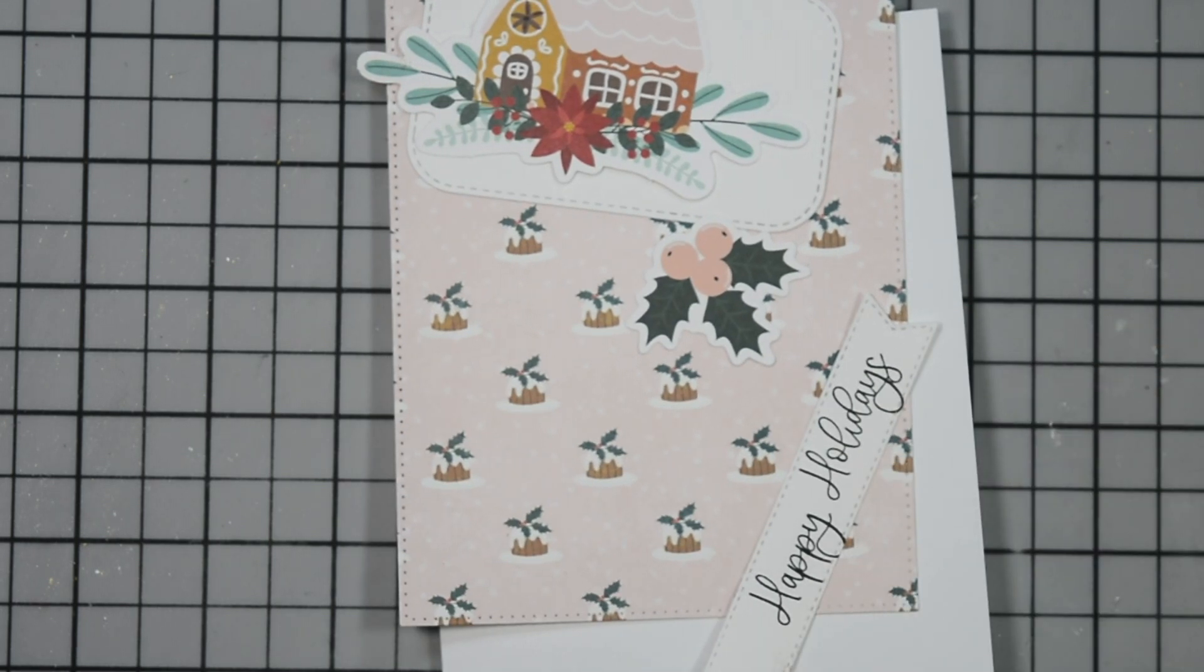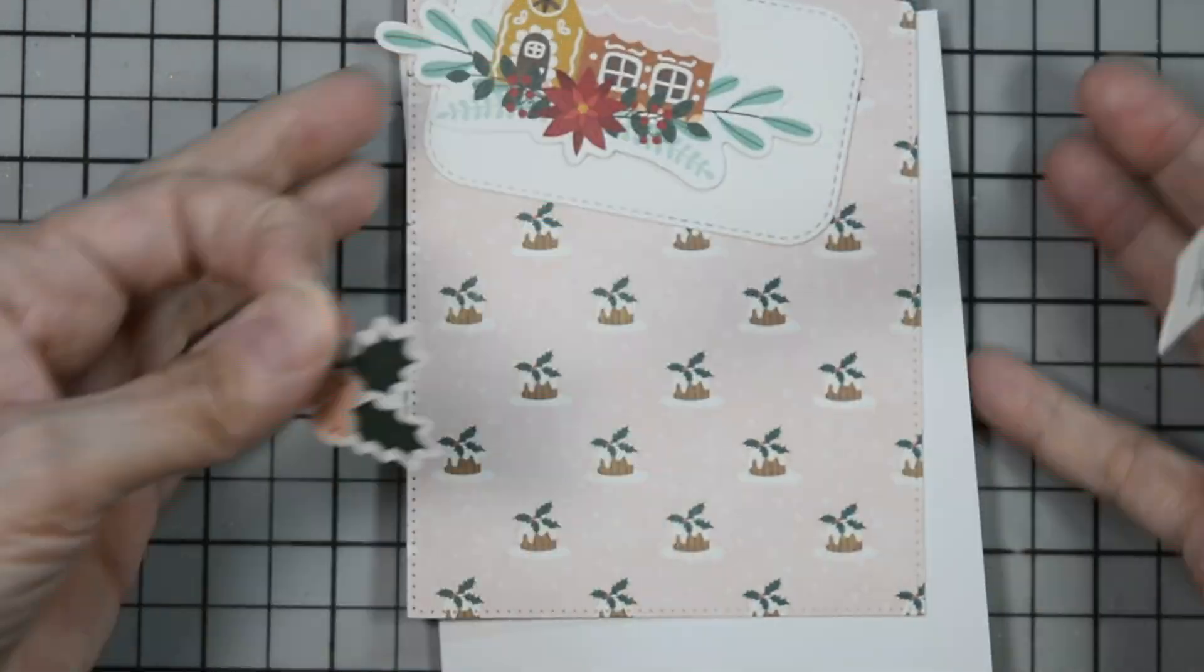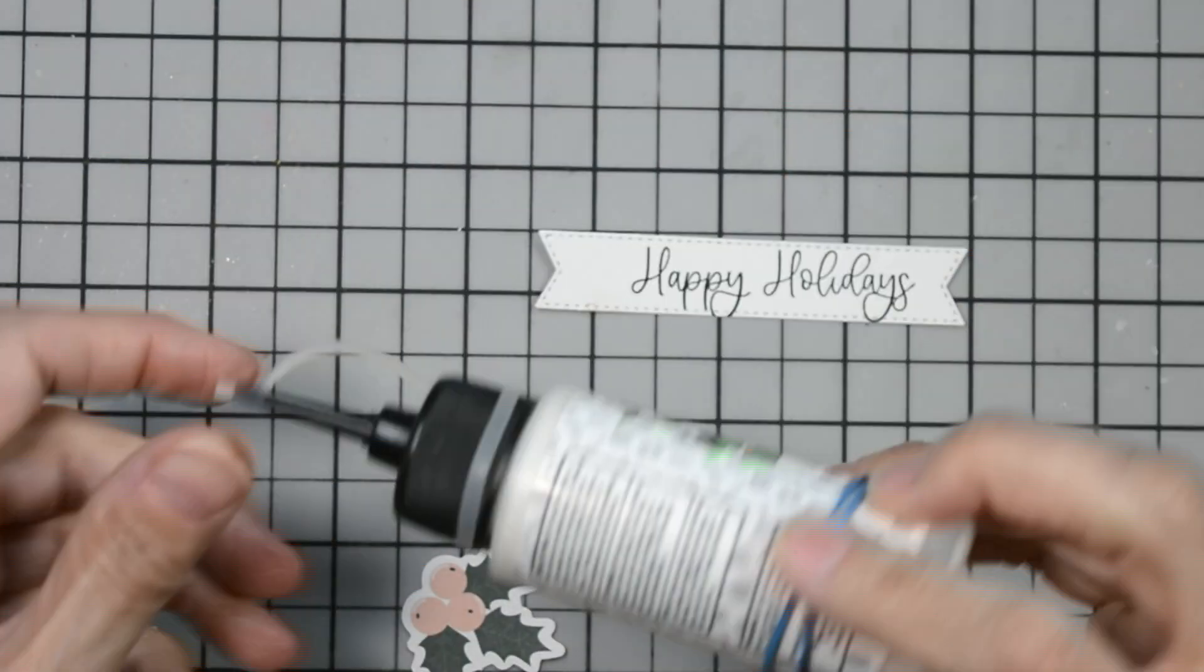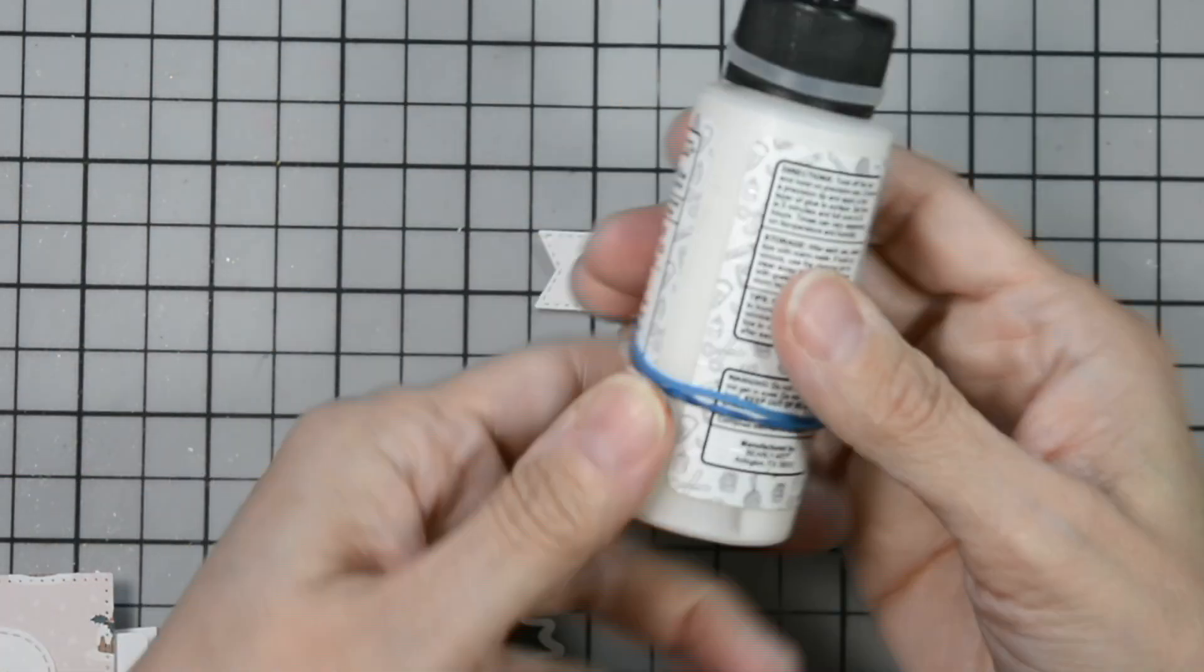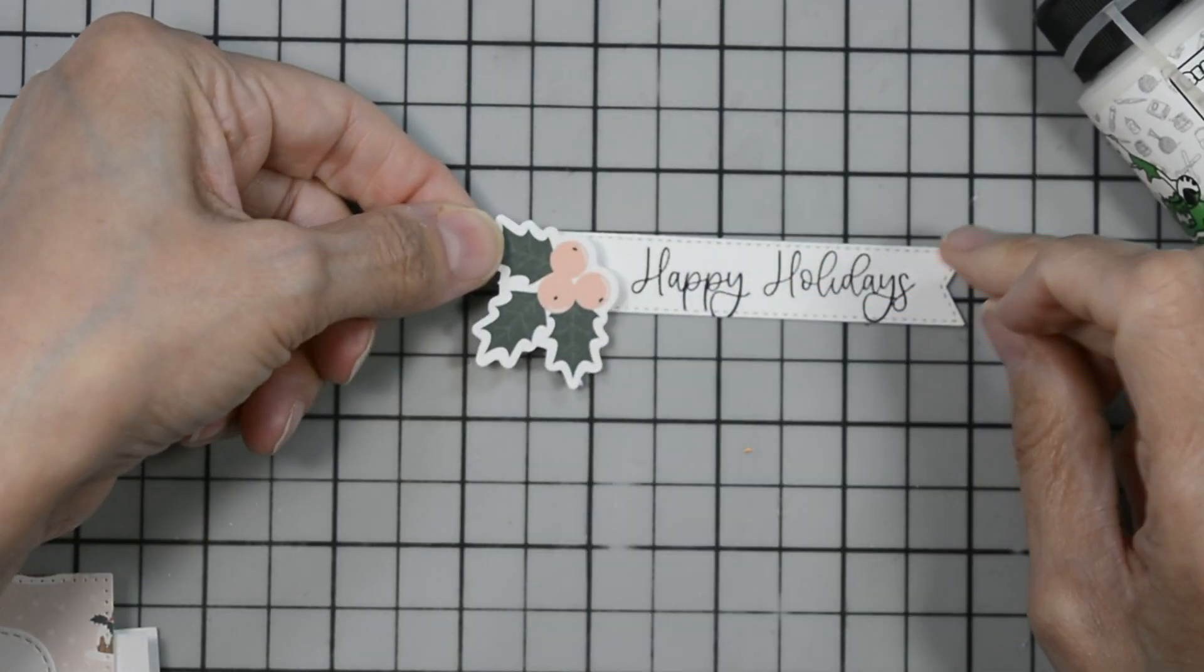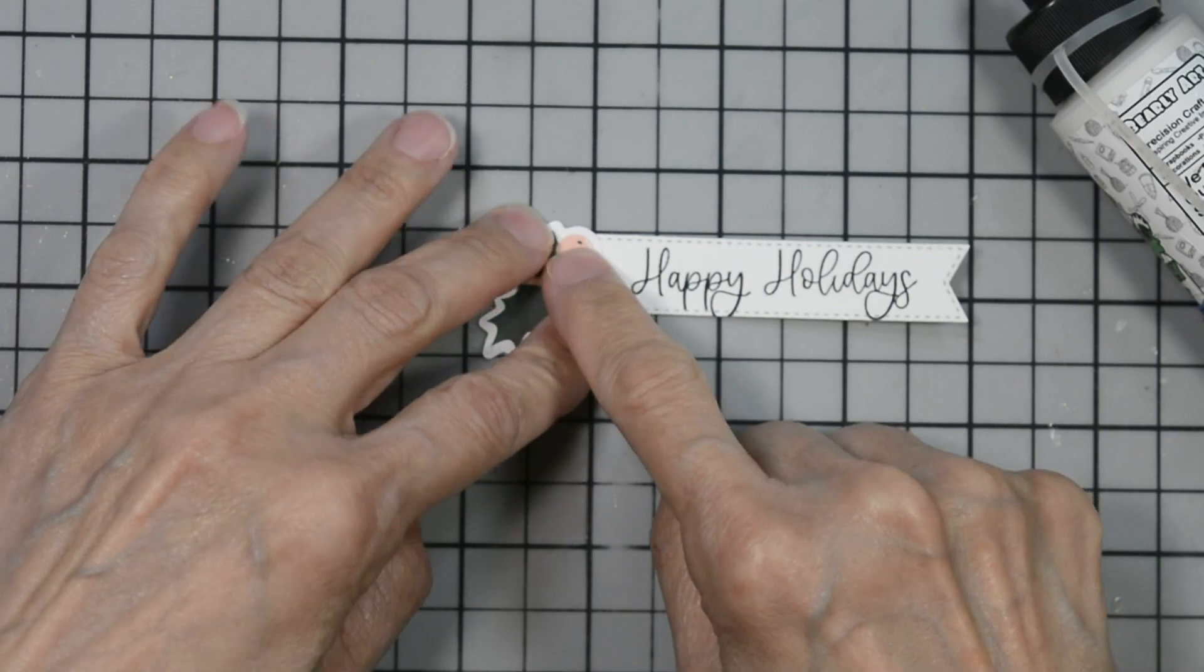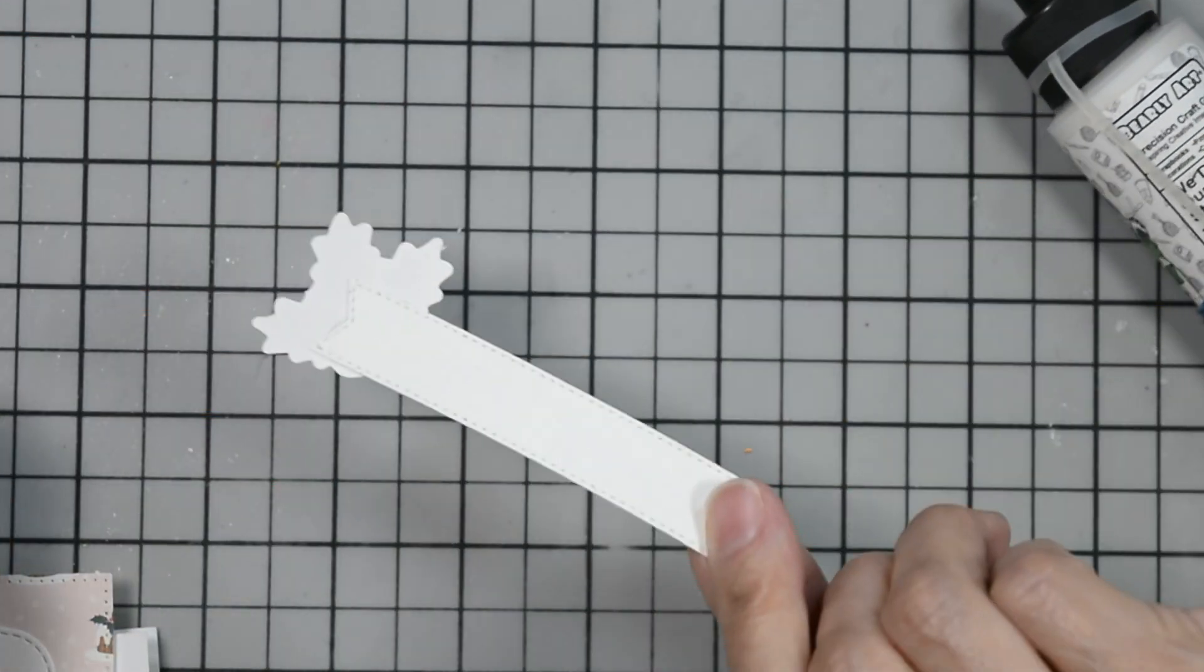Now I'm going to be very careful with my sentiment because it's still wet. That is one thing about VersaFine ink. It takes a little bit longer to dry. Now I'm going to go ahead and bring in some Barely Art Glue. And I'm going to adhere those berries right there on the left hand corner of that strip. And then I'm just going to set this over to the side to dry.